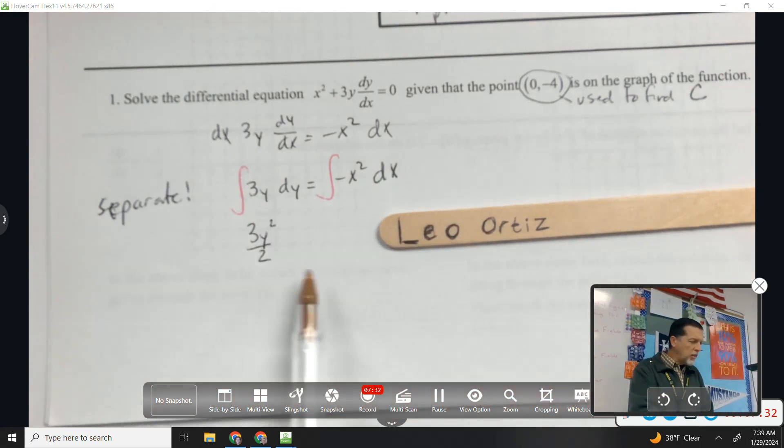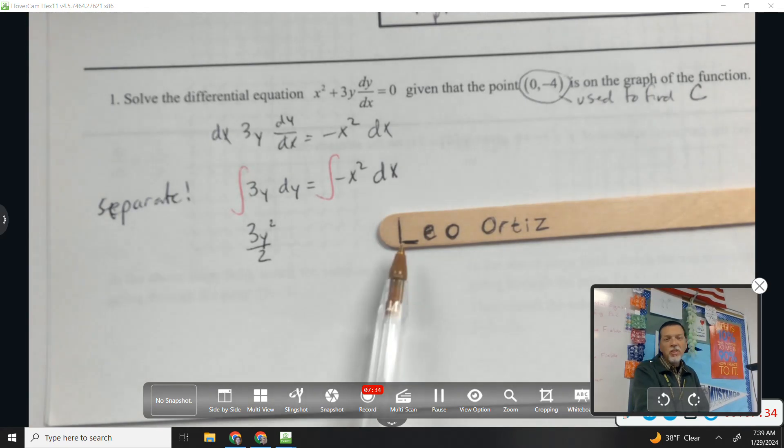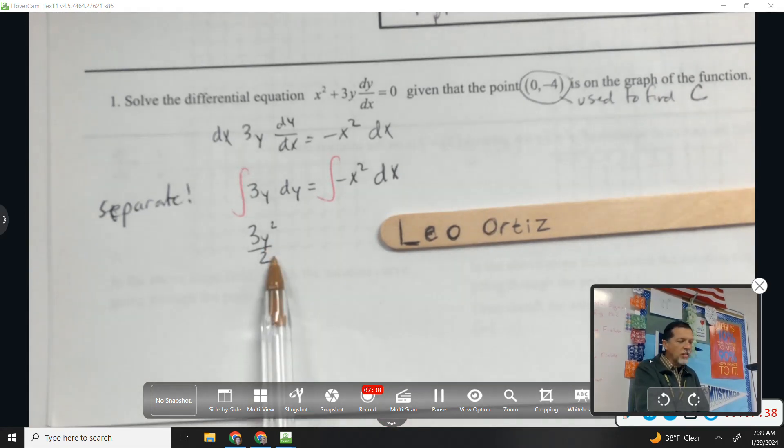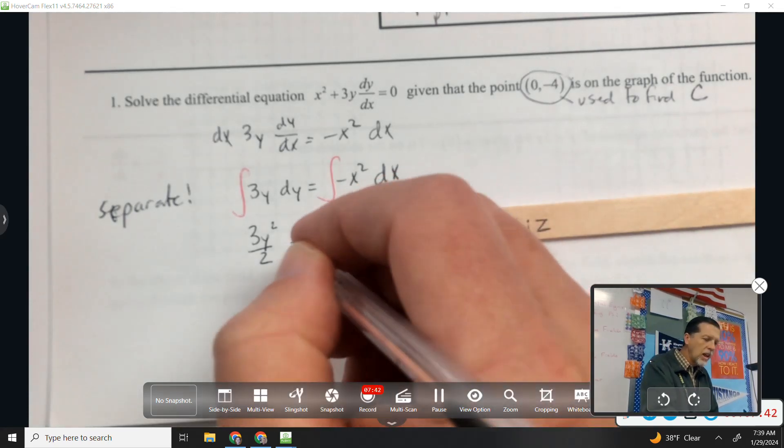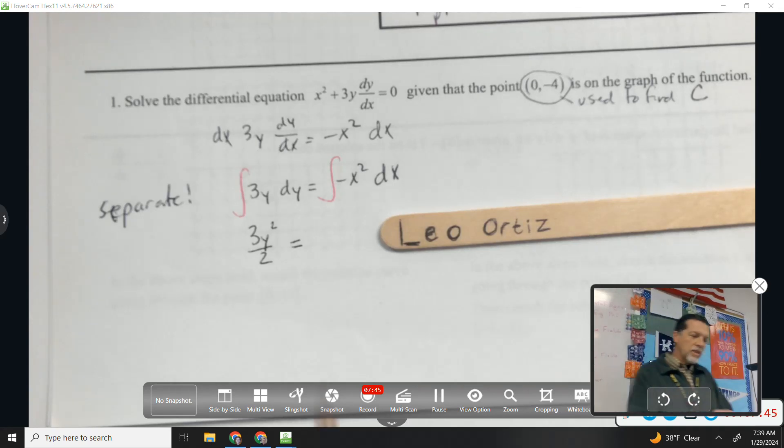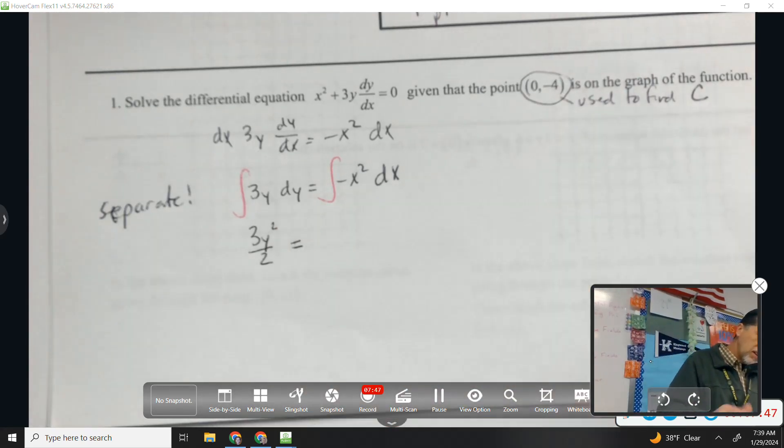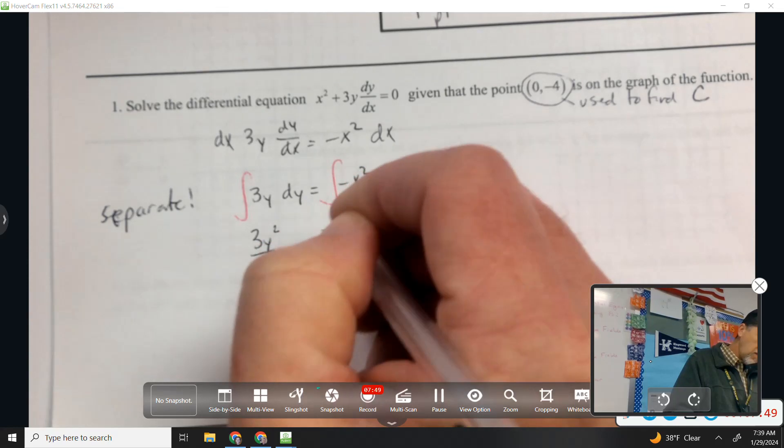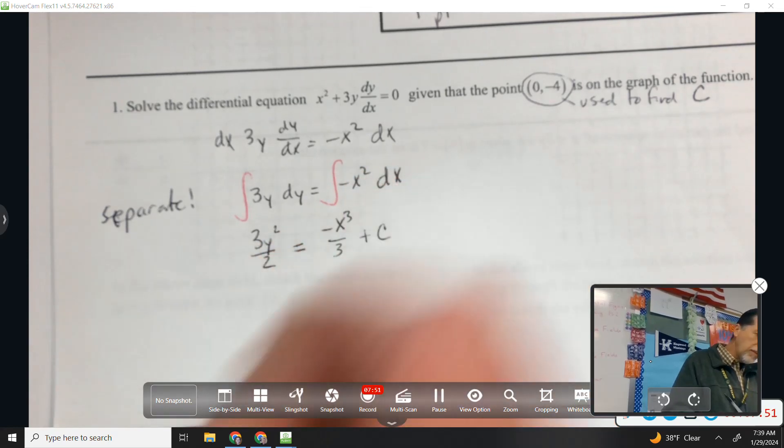By the way, you could put the plus C on either side or both sides, but usually we put it on the side with x because we know we're eventually solving for y. So hold off on the plus C until we get to the other side. Leo, how about the anti-derivative of negative x squared? Very nice. And then here's where we'll have the plus C.